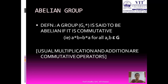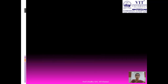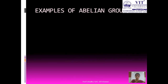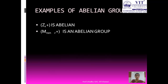Usually, multiplication and addition are always commutative operations. Examples of abelian groups: the set of integers under addition is always abelian. The set of all n by n matrices under addition is always an abelian group. However, the set of all n by n matrices under matrix multiplication may not be abelian, as matrix multiplication is not commutative.